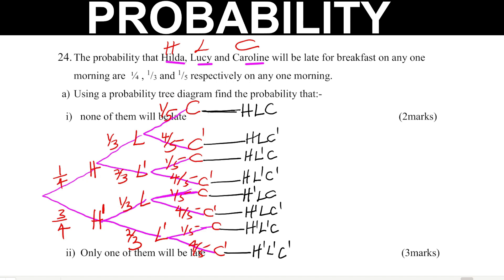That will help us answer the questions. Where we have H, that is the probability of Hilda being late; L is Lucy being late; C is Caroline being late. Anywhere you have prime means not being late — H prime is Hilda not being late, L prime is Lucy not being late, C prime is Caroline not being late.